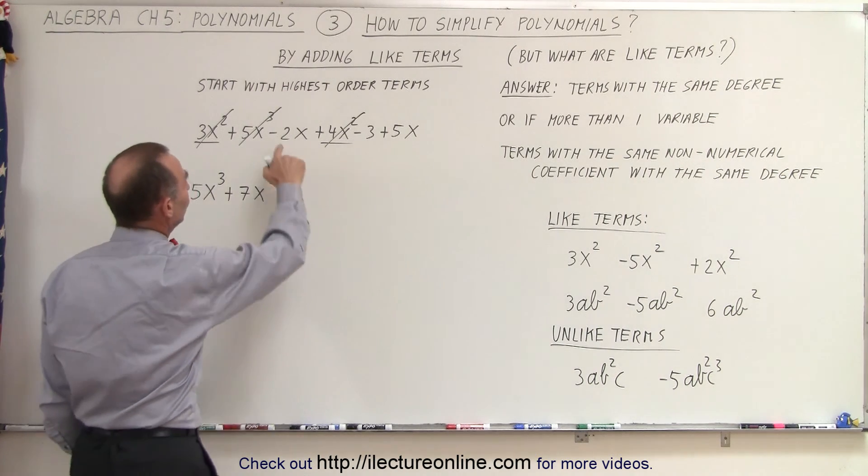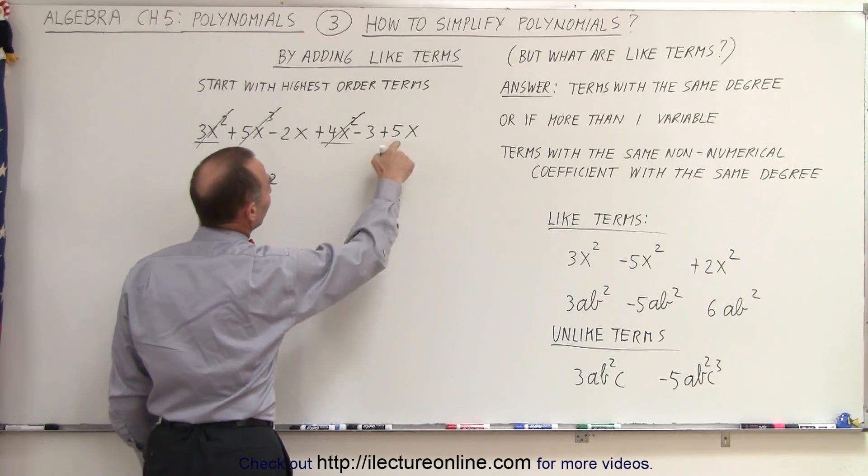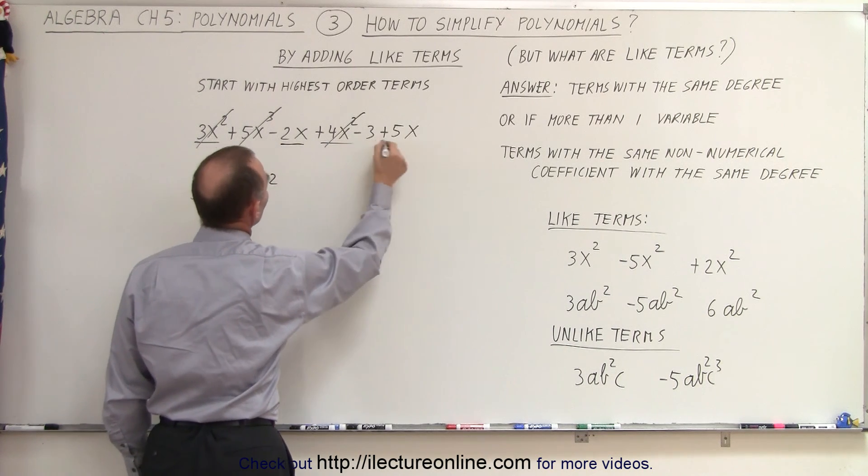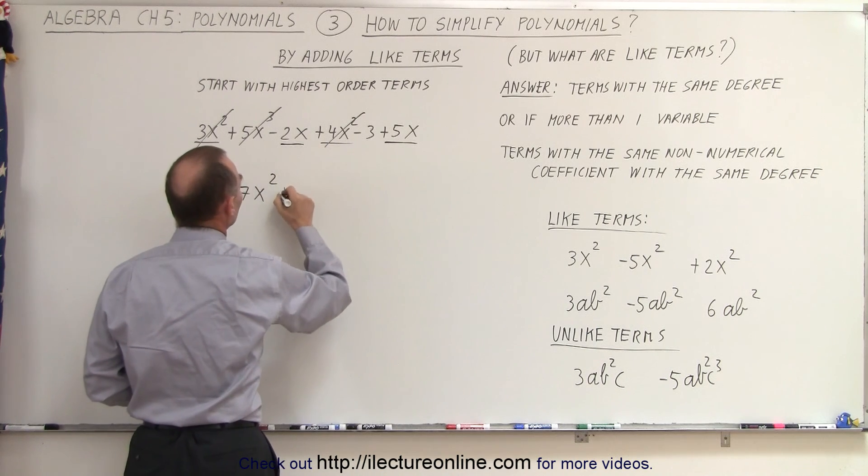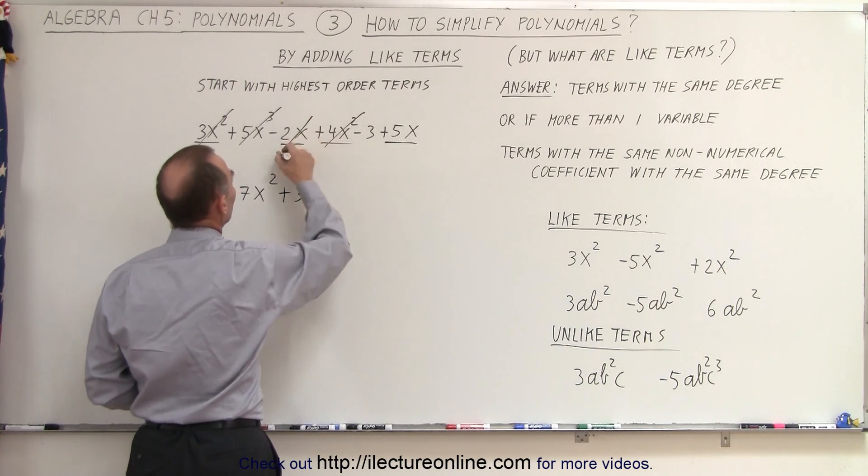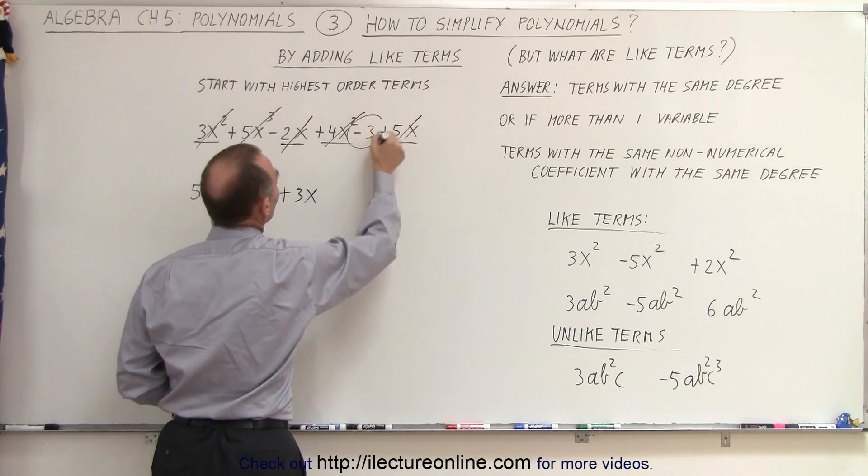Now, I have a 2x, a -2x and a +5x. They're both to the first power, so these two are the same. I can add those two together. -2 plus 5 is a +3x. Now I got rid of those two and now I have just one term left.